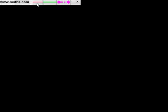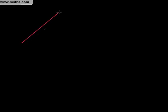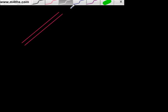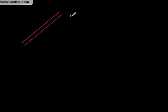Parallel lines mean that we have the same gradient — the gradient is exactly the same for both lines. So if we've got the form y equals mx plus c, then the m value of the two parallel lines are the same.